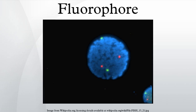Non-protein organic fluorophores belong to the following major chemical families: xanthene derivatives including fluorescein, rhodamine, Oregon Green, eosin, and Texas Red; cyanine derivatives including cyanine, indocarbocyanine, oxacarbocyanine, thiacarbocyanine, and merocyanine.